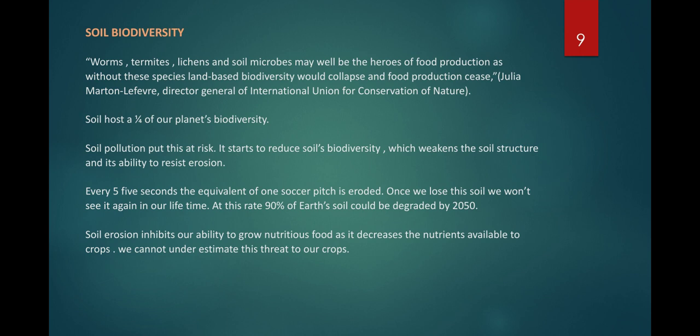According to FAO, every five seconds the equivalent of one soccer pitch of soil is eroded, and once we lose this soil we will not see it again in our lifetime. At this rate, 90% of all Earth's soil could be degraded by 2050. Soil erosion can be controlled through plantations, which are helped by fertile soil created by termites and worms. Soil erosion inhibits our ability to grow nutritious food as it decreases nutrient availability to crops.